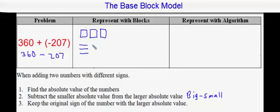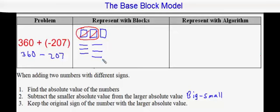Since there's a 3 in the hundreds place, I'm going to use 3 flats to represent 300. I'll use 6 rods to represent the 6 in the tens place — 1, 2, 3, 4, 5, 6 — and now we are to subtract off 207. Since there's a 2 in the hundreds place, that will subtract off 2 of the flats representing 200. I need to take away none of the rods. But I have to take 7 units away and we don't have any units because there was a 0 in the ones place.